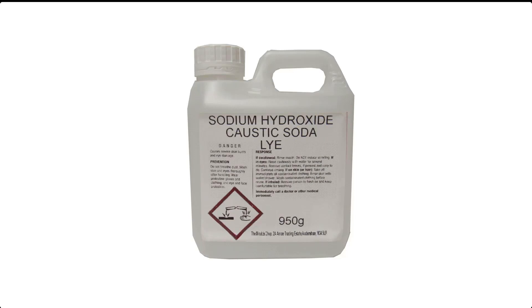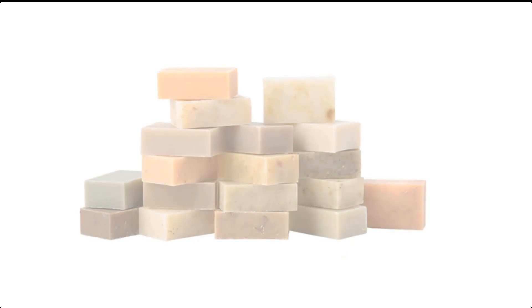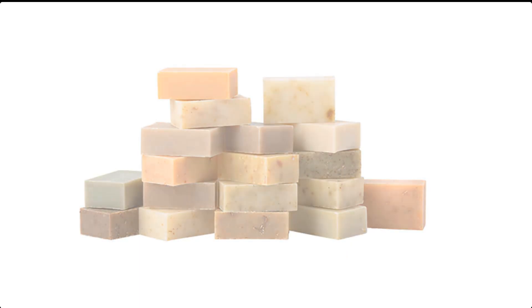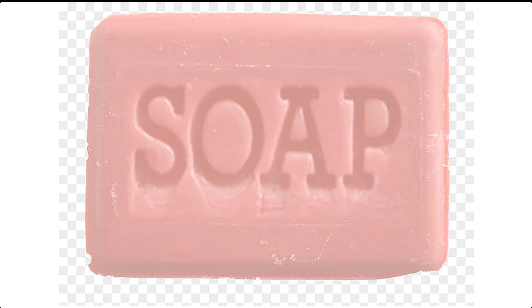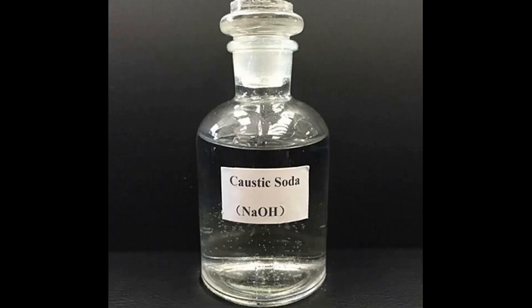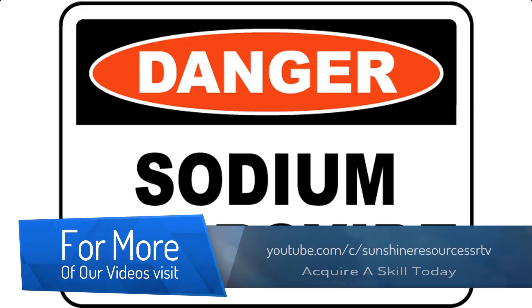Caustic soda is a very important chemical in soap making, such as bar soap and toilet soap. As a matter of fact, bar soap or toilet soap cannot be made without caustic soda or any other base. It reacts with fat or oils to form soap, a process called saponification.